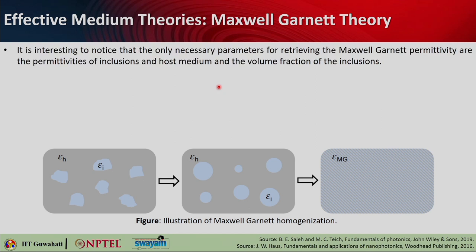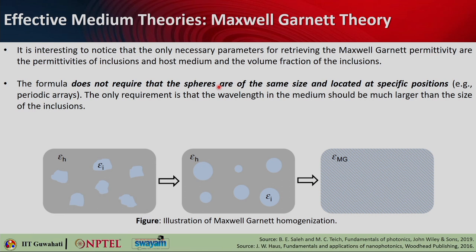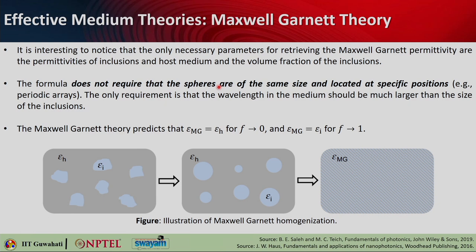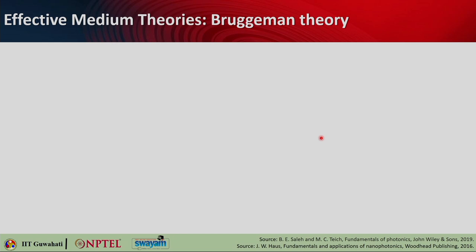The only necessary parameters for retrieving Maxwell-Garnett permittivity are the volume fraction and the two permittivities. This formula does not require the spheres to be of the same size or located at specific positions. The only requirement is that the wavelength in the medium must be much larger than the size of the inclusion, so that the quasi-static approximation remains valid. Maxwell-Garnett theory predicts: if f = 0, the effective permittivity equals the host one; if f = 1, it equals the inclusion permittivity.